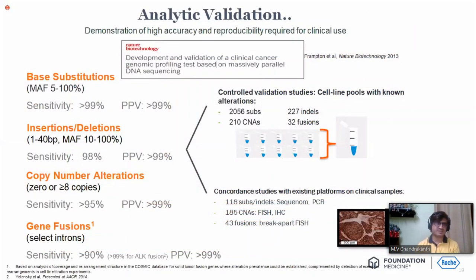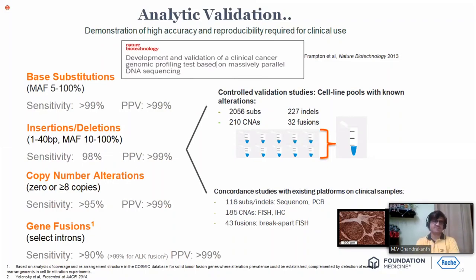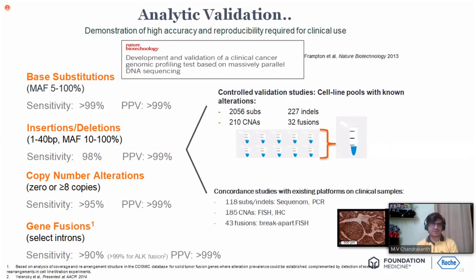This is the validation data for all four alteration types. You can see the sensitivity, specificity, and positive predictive value for base substitutions, insertions/deletions, copy number alterations, and rearrangements. For all of them, the sensitivity is above 90% and the positive predictive value is 99%, which is excellent.